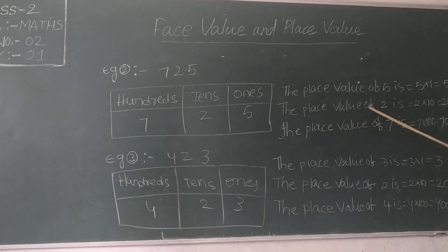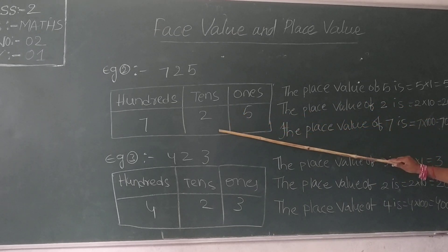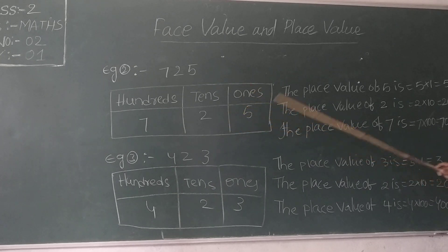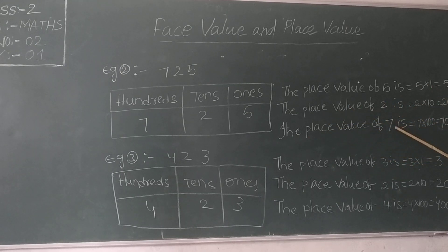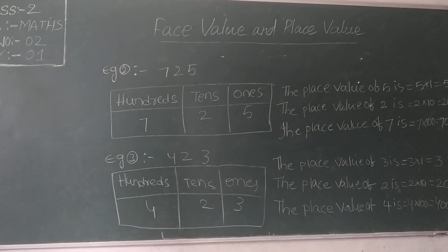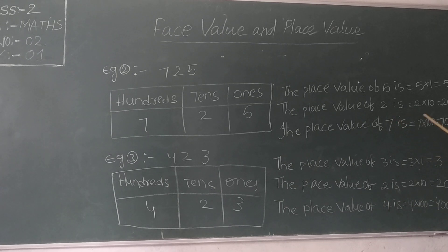The place value of 7 — 7 is in the 100s place. So the place value of 7 is 7 × 100 = 700. You can see the example clearly using the place value chart.